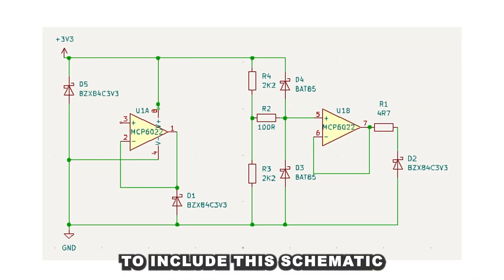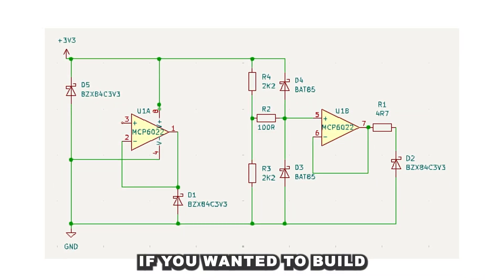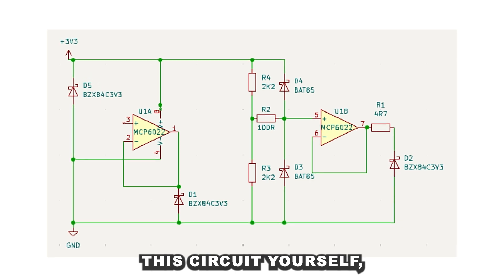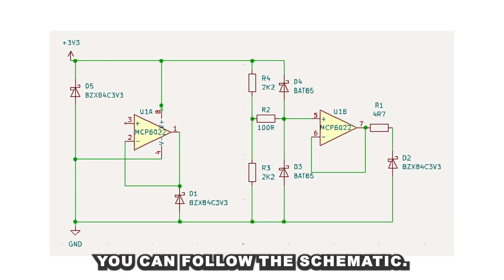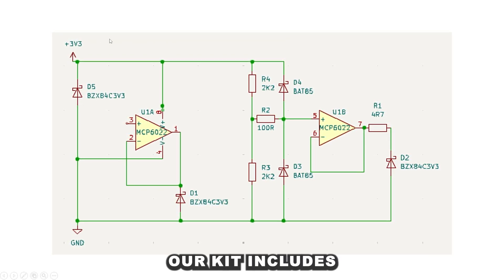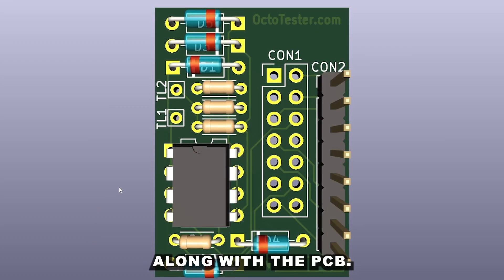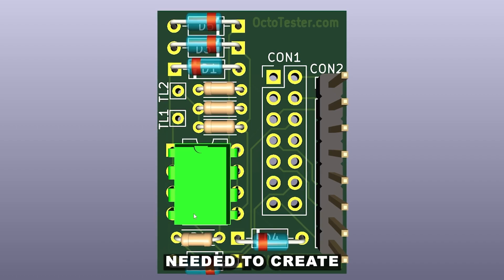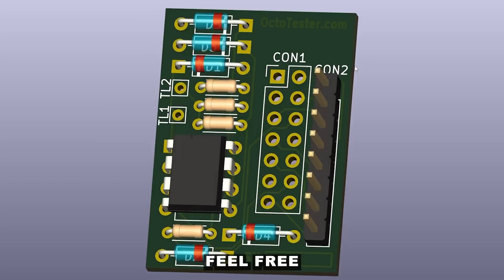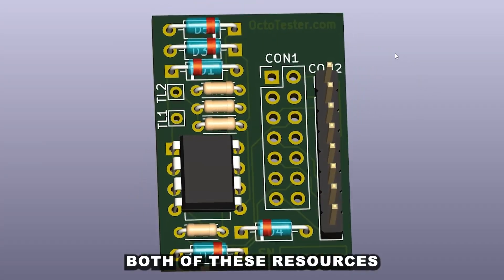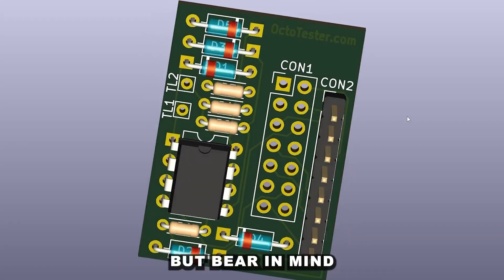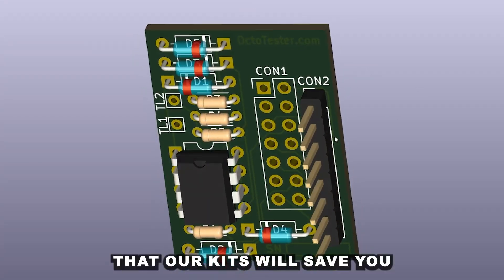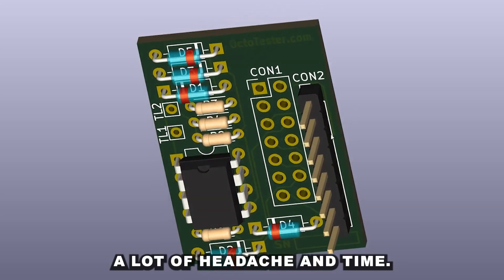We have decided to include this schematic. If you wanted to build this circuit yourself you can follow the schematic. Of course our kit includes everything you need along with the PCB and all of the components needed to create the circuit board. Feel free to use both of these resources to make a circuit yourself, but bear in mind that our kit will save you a lot of headache and time.